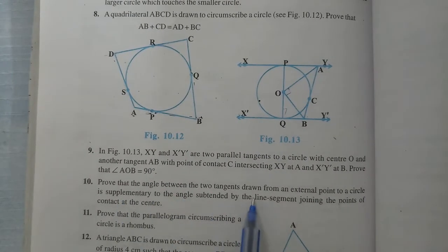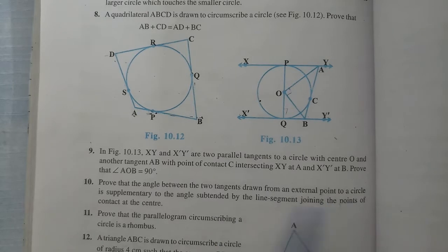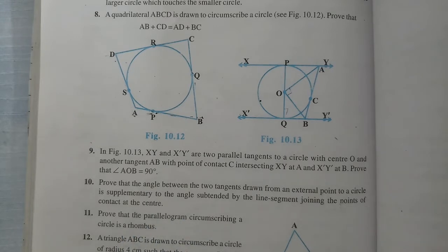Prove that the angle between the two tangents drawn from an external point to a circle is supplementary to the angle subtended by the line segment joining the points of contact at the center.